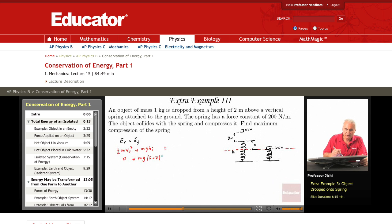Is equal to the final energy, half MV_f squared, which is zero, because the object has zero velocity at maximum compression.